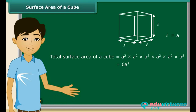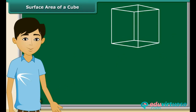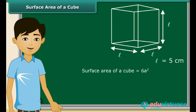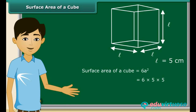Let us do an example. This is a cube having a length of each side equal to 5 centimeters. So its surface area will be 6A square. Substituting the value of A, we get 6 into 5 into 5, which is equal to 150 square centimeters.